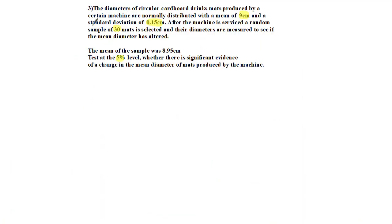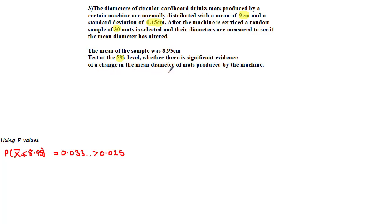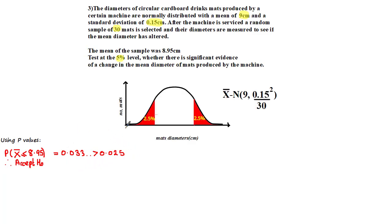We can conclude that since the observed value of 4.81 falls outside the critical region, we would accept H0. Looking at this last example, which we've also solved in a previous tutorial, using the p-value method, the p-value was equal to 0.033, which is greater than 0.025, which was half the significance level. The reason why we halve the significance level was because we were asked to test whether there is significant evidence of a change in the mean diameter, and by looking at the keyword 'change', we established that this was a two-tailed test.